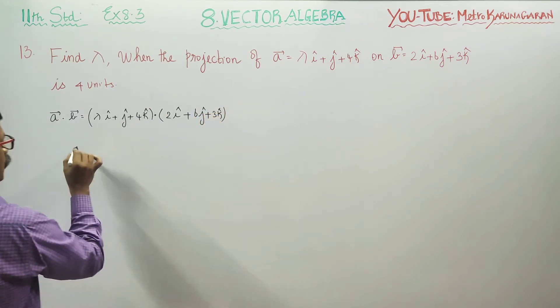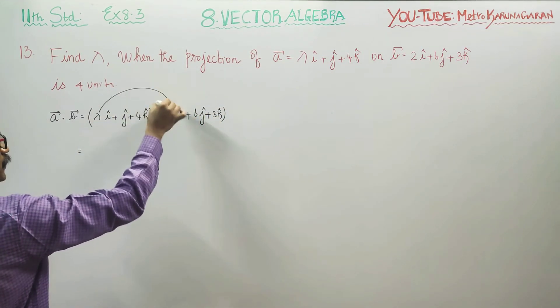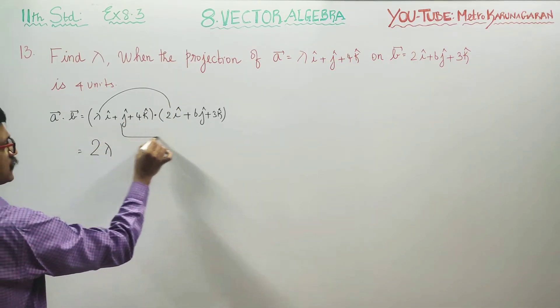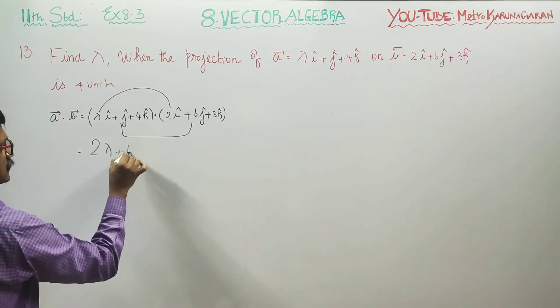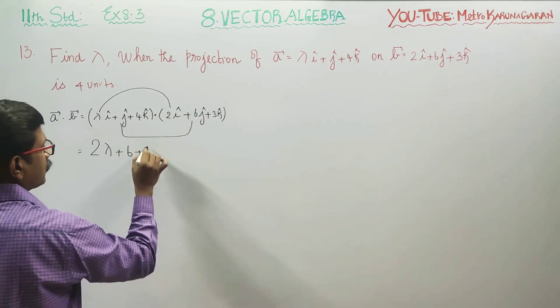First find the dot product. I component with I gives 2 lambda, J with J gives 6, K with K gives 12.